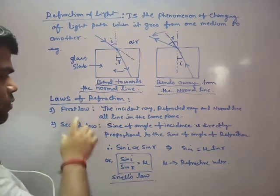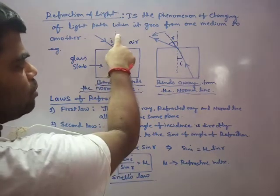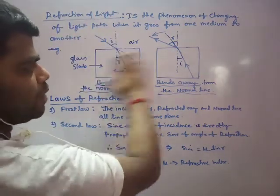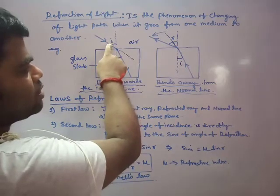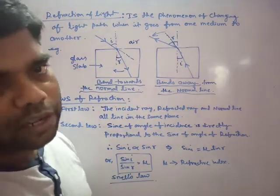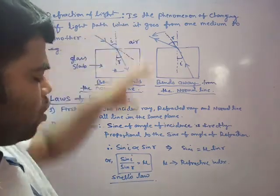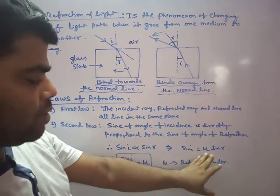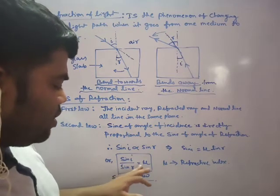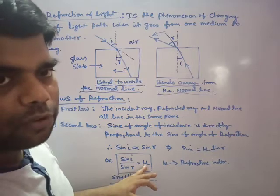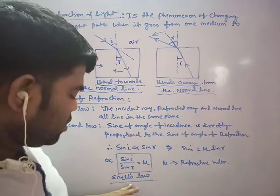Now the laws of refraction — as you studied in class 10. First law: the incident ray, refracted ray, and normal line all lie in the same plane. Second law: sine of angle of incidence is directly proportional to the sine of angle of refraction. This is also known as Snell's law.